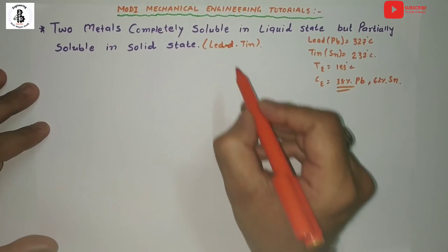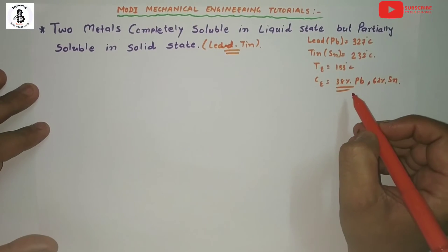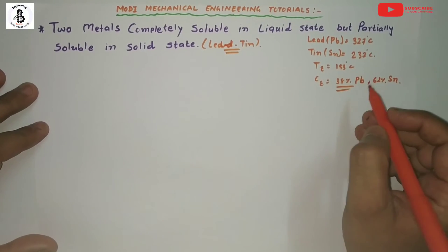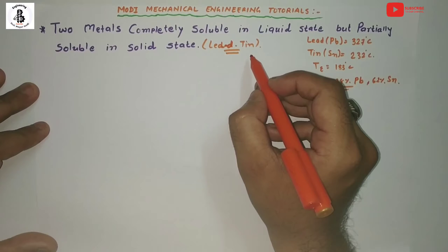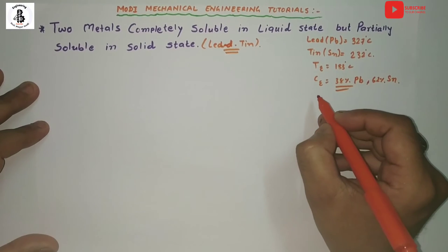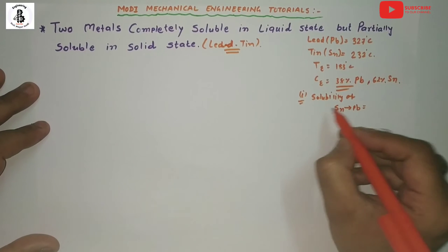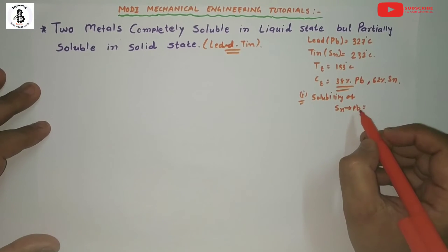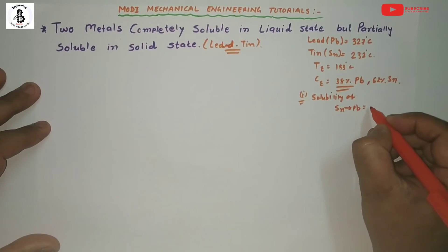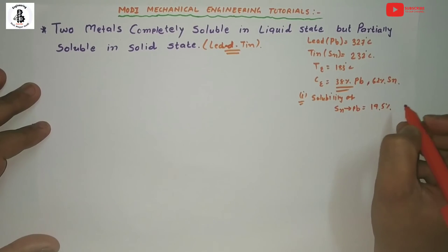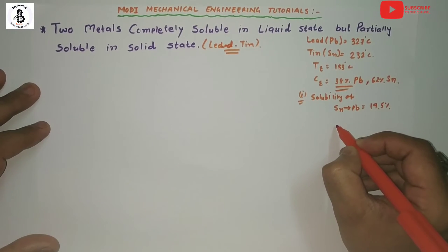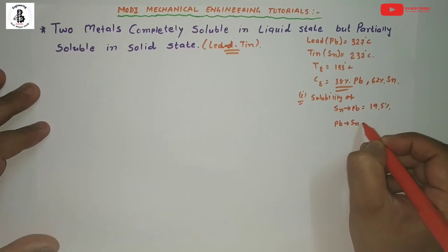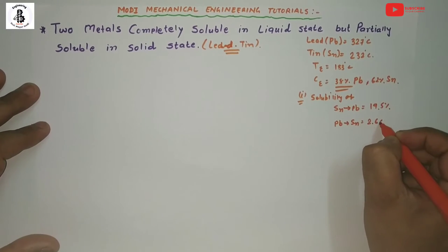We will draw a phase diagram for lead and tin for the given eutectic conditions. Both metals lead and tin have partial solubility in solid state. The solubility of tin into lead is 19.5% at eutectic temperature, and similarly the solubility of lead into tin is around 2.6% at eutectic temperature.